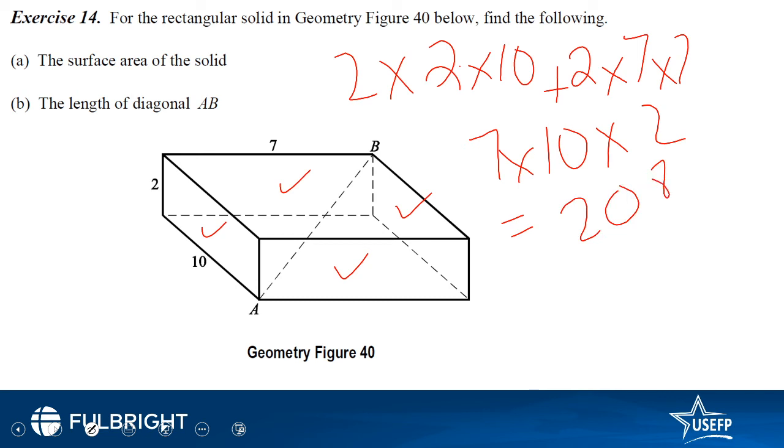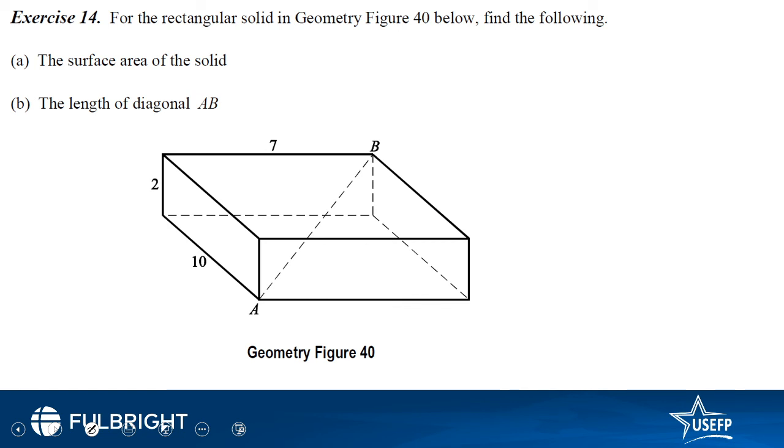Now the part b, slightly more difficult, we have to find the length of the diagonal AB. So pause this video, make sure that you solve this. So we need to find length AB. So the length AB is the hypotenuse of this triangle, this red triangle, which is the hypotenuse of this. We have this length which is 2. We don't have this length.